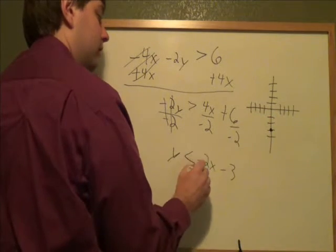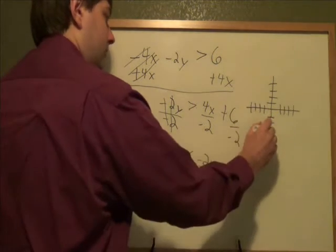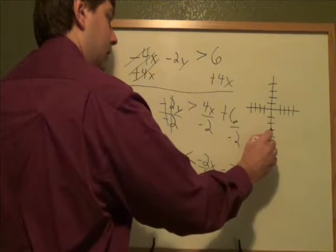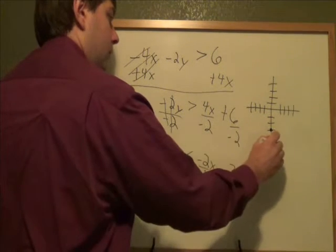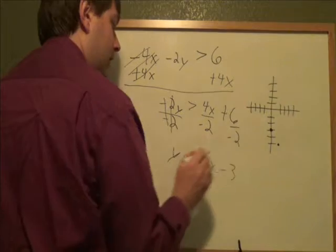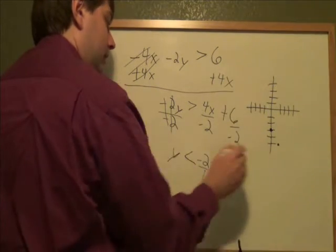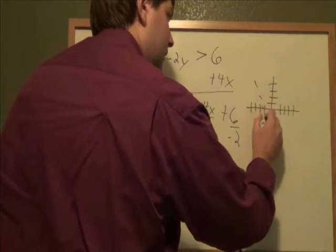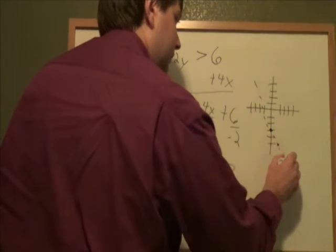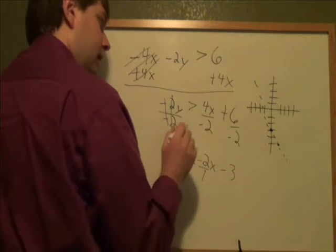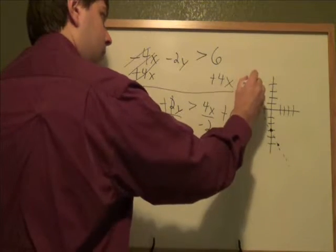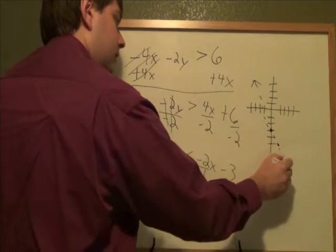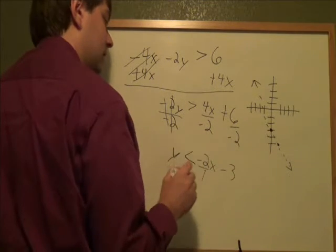And my slope is negative 2 over 1. That's a negative slope, so I'm going to go down instead of up. Down 2, 1 to the right, there's my next point. Now I'm ready to graph that line. Now, this is a less than, it does not have an or equal to, so it gets a dotted line. And then lines do have the arrows, they go forever, even if they're dashed lines instead of solid lines.